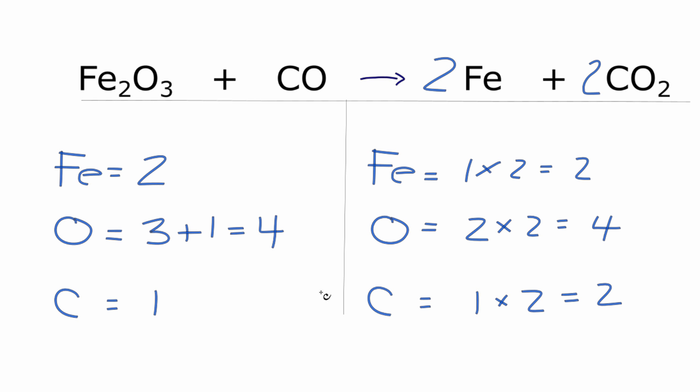And it seems like it would be pretty easy to do that. We could put a two right here, and then the one times the two, that would equal two. That would fix the carbons. But now I need to update the oxygens. So I have the three oxygens here, and then I have the one times the two, the two oxygens there. And now I have five oxygens.